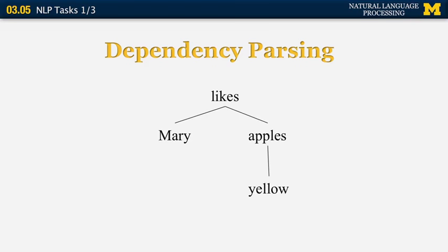Those two slots are filled by Mary and apples. Mary is the liker and apples is, in linguistics terminology, the liked. Finally, there is one more word to represent: 'yellow.' Yellow does not modify 'likes' or 'Mary' — the only thing it modifies is 'apples.' Therefore, we draw it as a child node of apples in the dependency tree.